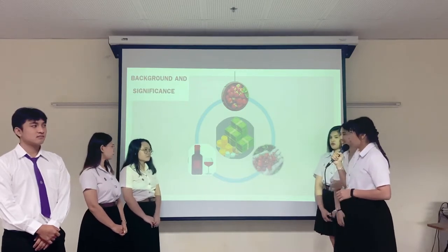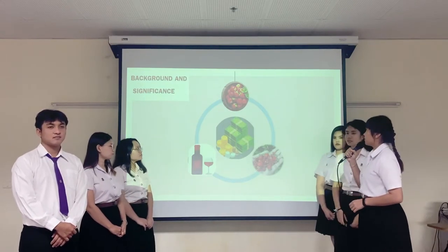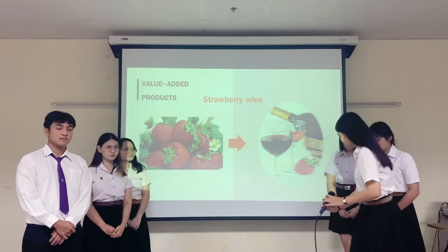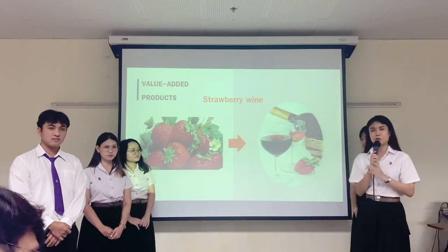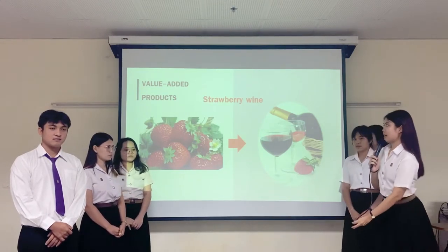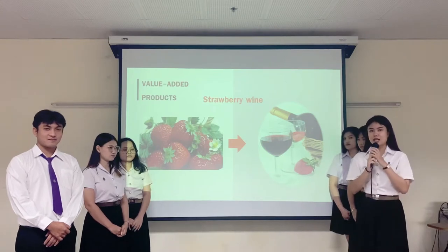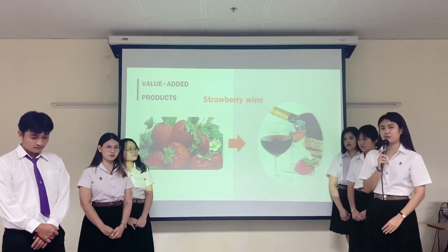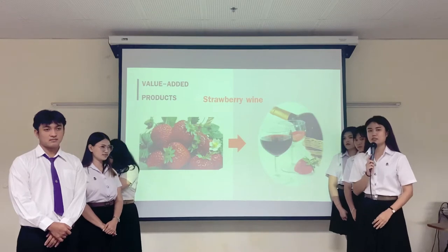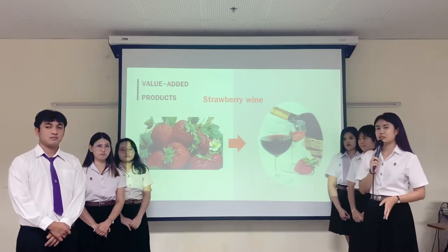Number three, farmers have to transform products from strawberry to add value. Processing into products from strawberry — such as strawberry juice, strawberry jam, and strawberry wine — are becoming popular because strawberry has many benefits, such as helping with the circulatory system.